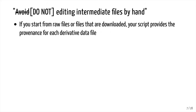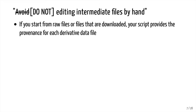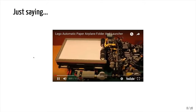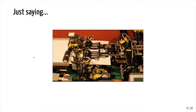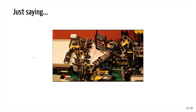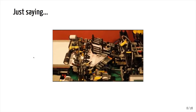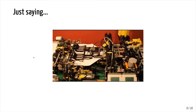Do not edit intermediate files by hand. We want to keep our raw files raw. If we start from raw files or downloaded files, your script is going to provide the provenance of each derivative data file — by scripting it, we're automating the analysis and we're not going to write over earlier files. Going back to the paper airplane example, imagine how much more uniform, reproducible, and fast the construction would be if it could be programmed. This is what we're going for as we think about our data analysis pipeline — we're interested in starting with a blank directory with some code, launching that code, and coming back to find data directories full of raw and processed data, and eventually a written manuscript.